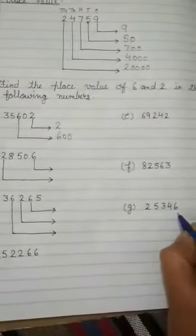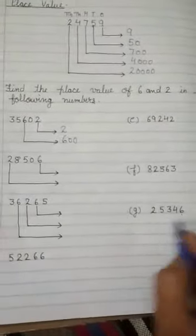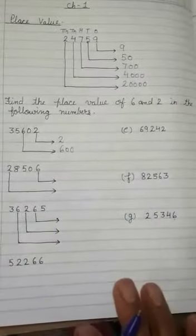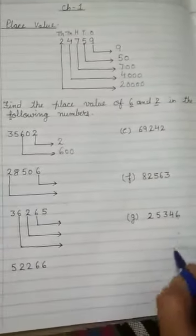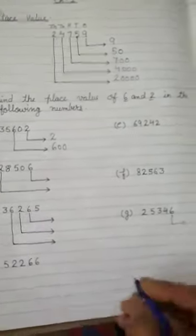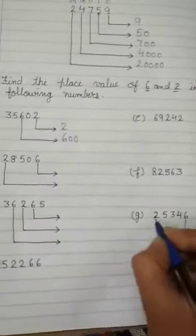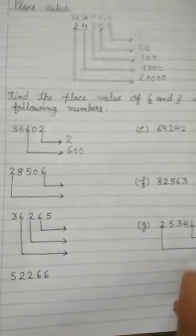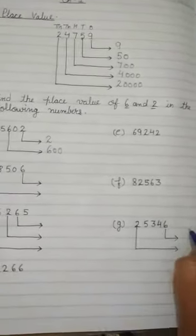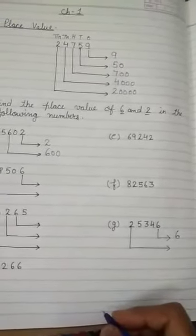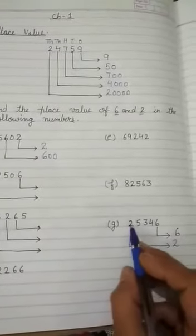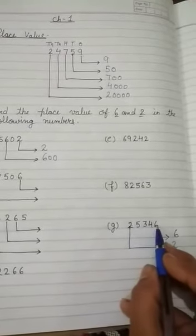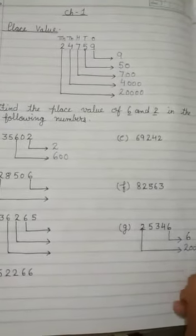One more example I will explain you. We have in this question, we have to find out the place value of only 2 numbers, only 6 and 2. That's why we are doing the place value of only 6 and 2. In this question, the place value of 6 is 6 ones, so we will write here only 6. And the next number is 2. After 2, there are 1, 2, 3, 4 digits. That's why we are putting here 4 zeros.